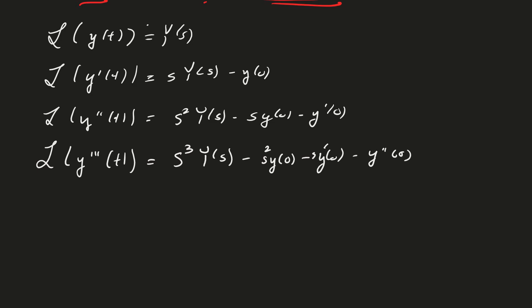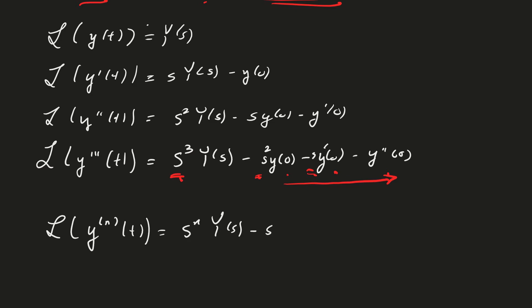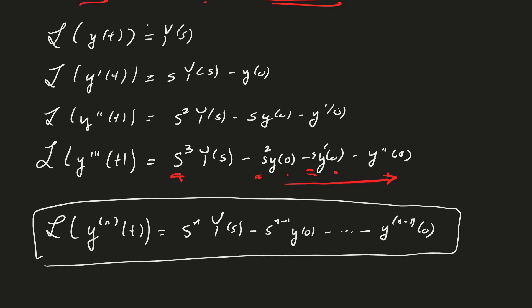You can see the pattern: the powers of s are decreasing while the derivative order is increasing — going from s cubed, s squared, s, and the derivatives going y, y prime, y double prime. For the general nth derivative, the Laplace transform is s to the n times Y(s) minus s to the n minus 1 times y(0), minus down to the (n minus 1)th derivative of y at 0. This is table entry number 14.